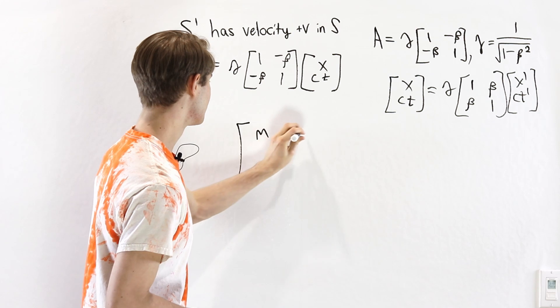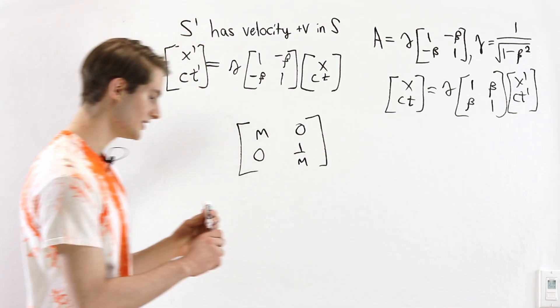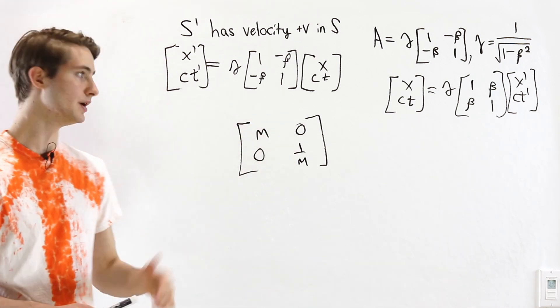So we have some matrix of the form M, 0, 0, 1 over M, and I'm setting this up so that these two will multiply to equal 1.